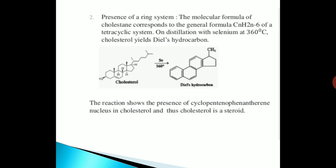Presence of a ring system: The molecular formula of cholestane corresponds to the general formula of CnH2n-6 of a tetracyclic system. On distillation with selenium at 360 degree centigrade, cholesterol yields hydrocarbon. Here we can see in this reaction the cholesterol in presence of selenium at 360 degree centigrade gives Diels hydrocarbon. The reaction shows the presence of a cyclopentanophenanthrene nucleus in cholesterol and thus cholesterol is a steroid.